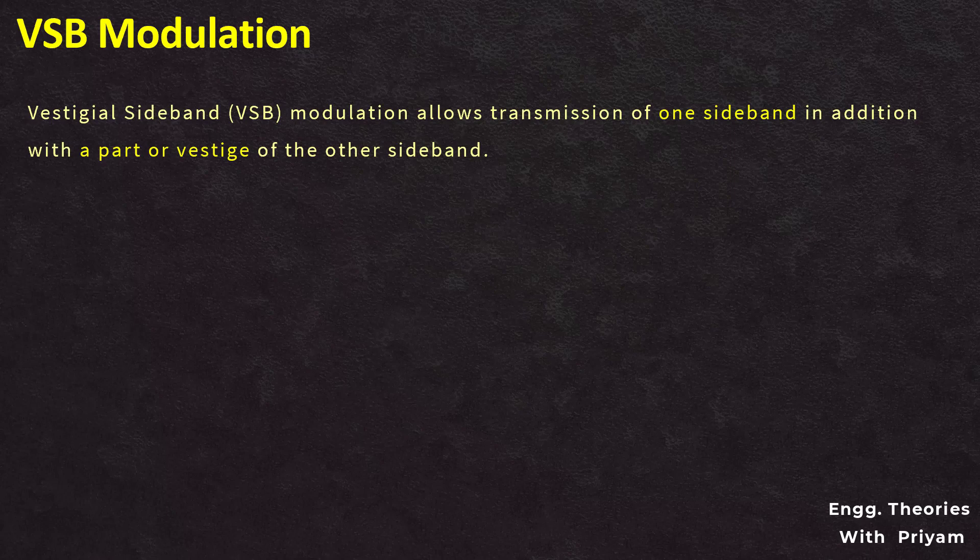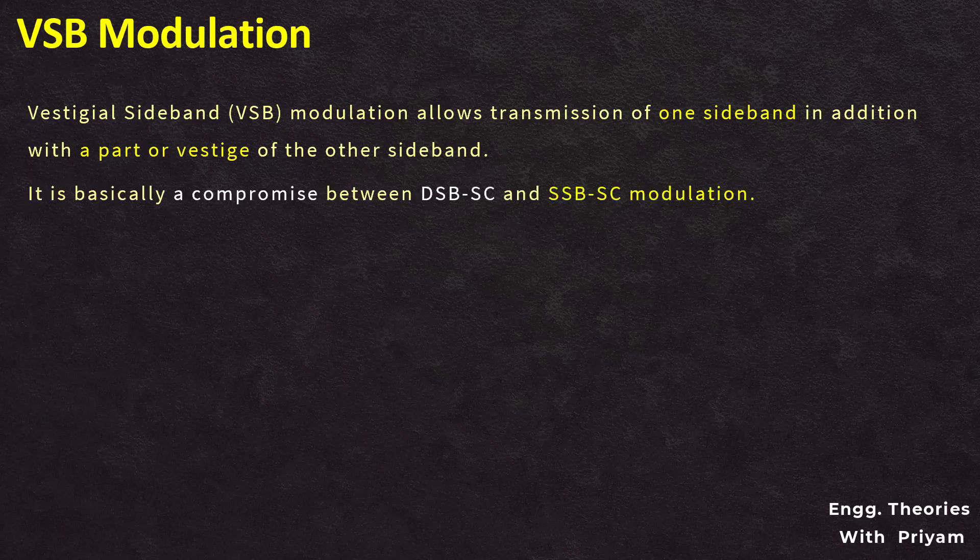In this lecture we will understand vestigial sideband modulation. VSB modulation is a technique which allows the transmission of one sideband in addition with a vestige of the other sideband. It is basically a compromise between DSB-SC and SSB-SC modulation, and it is a form of amplitude modulation that reduces the bandwidth required for transmission while preserving most of the original information.